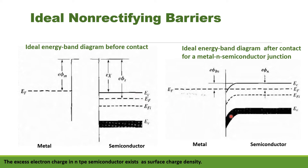In the second diagram, the ideal energy band diagram after contact for a semiconductor-metal junction is represented. At the left side we have metal and the right side is semiconductor. To achieve thermal equilibrium, electrons from the metal side flow into the semiconductor side. After this thermal equilibrium is achieved, we can see that EF on both sides — the metal side and semiconductor side — are on the same straight line.